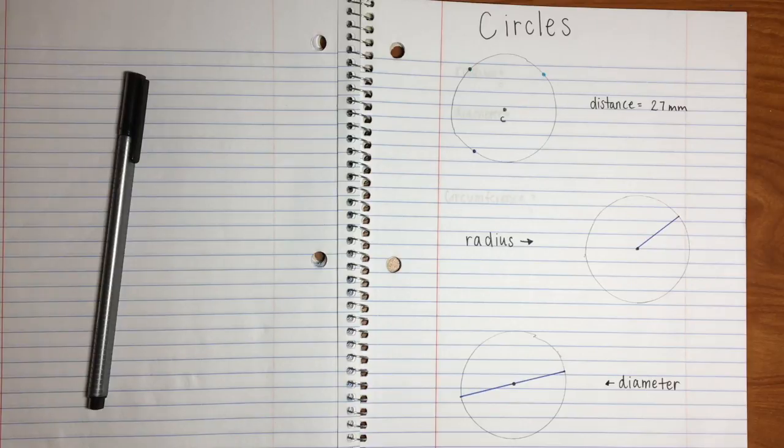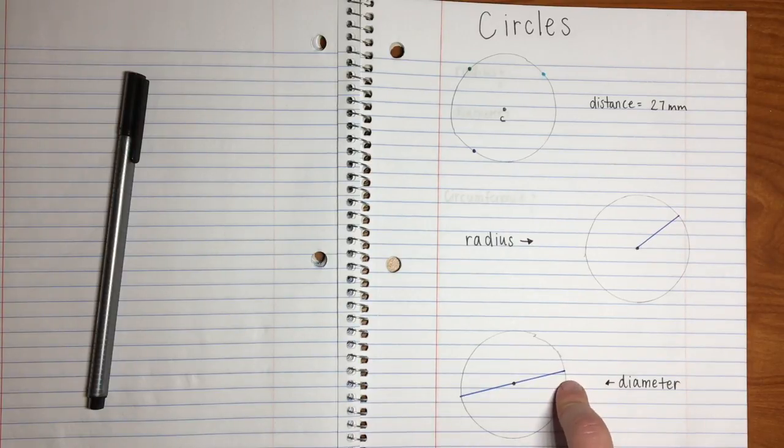Then we also know that the diameter is a distance across the circle through the center point. So right here, we have the distance across the circle. So one point on one side, one point on the other side, and it passes through the center point.